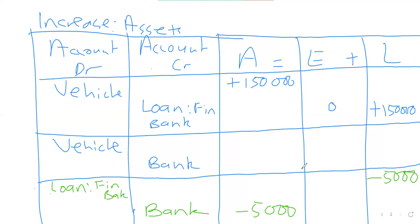To confirm: you bought a car on loan — assets will be plus 150,000. On equity there's zero effect. On liabilities there will be plus 150,000 because you bought that car on loan. Once you start paying — say 5,000 — the debit will be the loan account, and bank will also be involved because money is going out of your account.